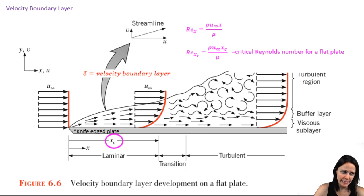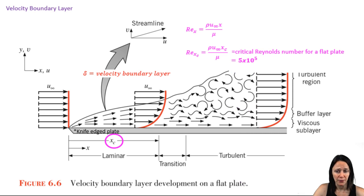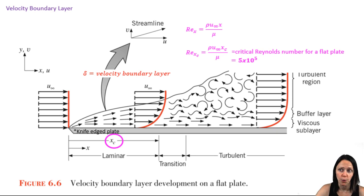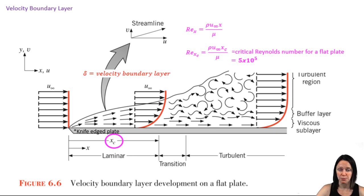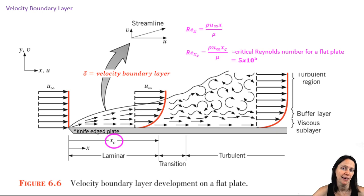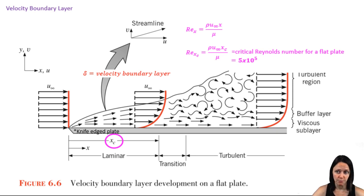You might see slight variations in the literature regarding this number, but 500,000 is the critical Reynolds number for flow over a flat plate that we'll use here. The reason you see variation is that the critical Reynolds number is dependent on the surface roughness and the level of turbulence in the free stream. In reality, the Reynolds number may vary between 100,000 and 3,000,000.